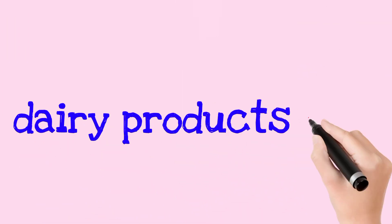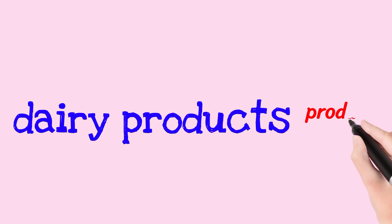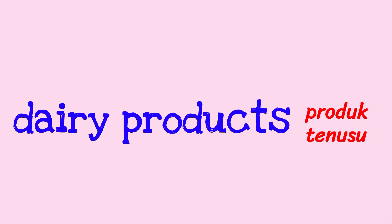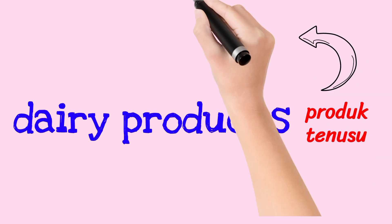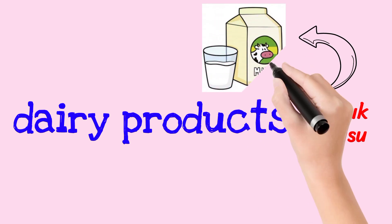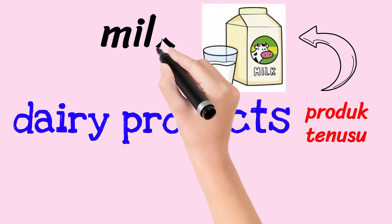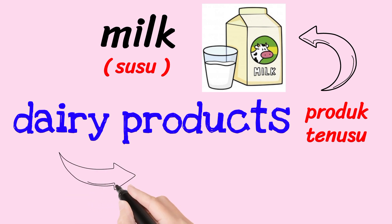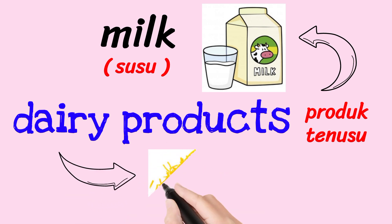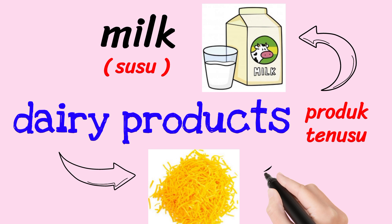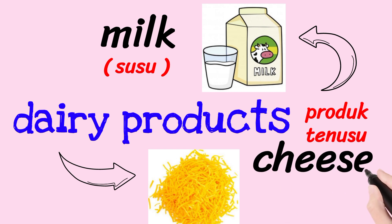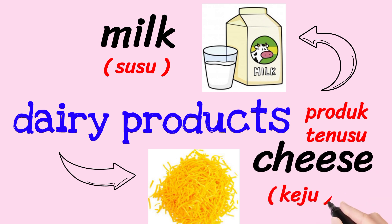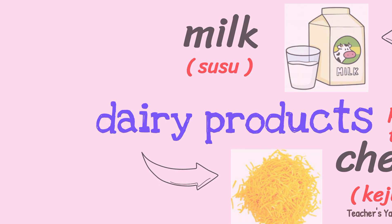Fourth is dairy products — produk tenusu. For example, milk (susu) and cheese (keju). Dairy products come from animals and make our bones stronger.